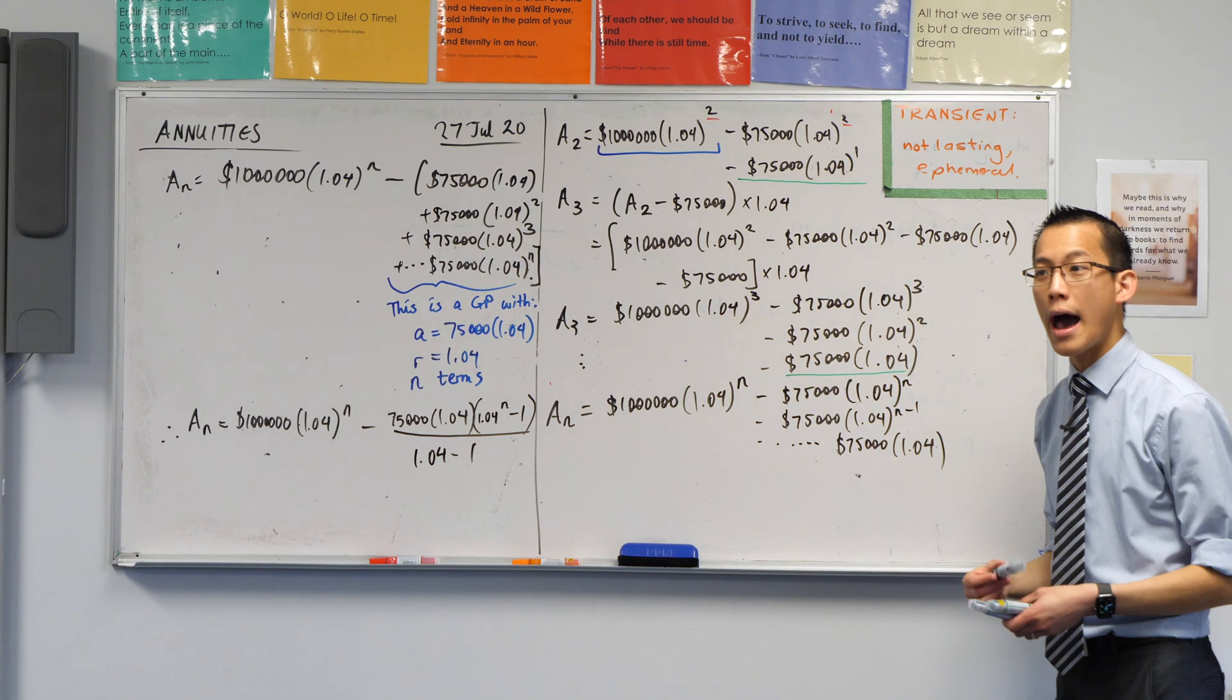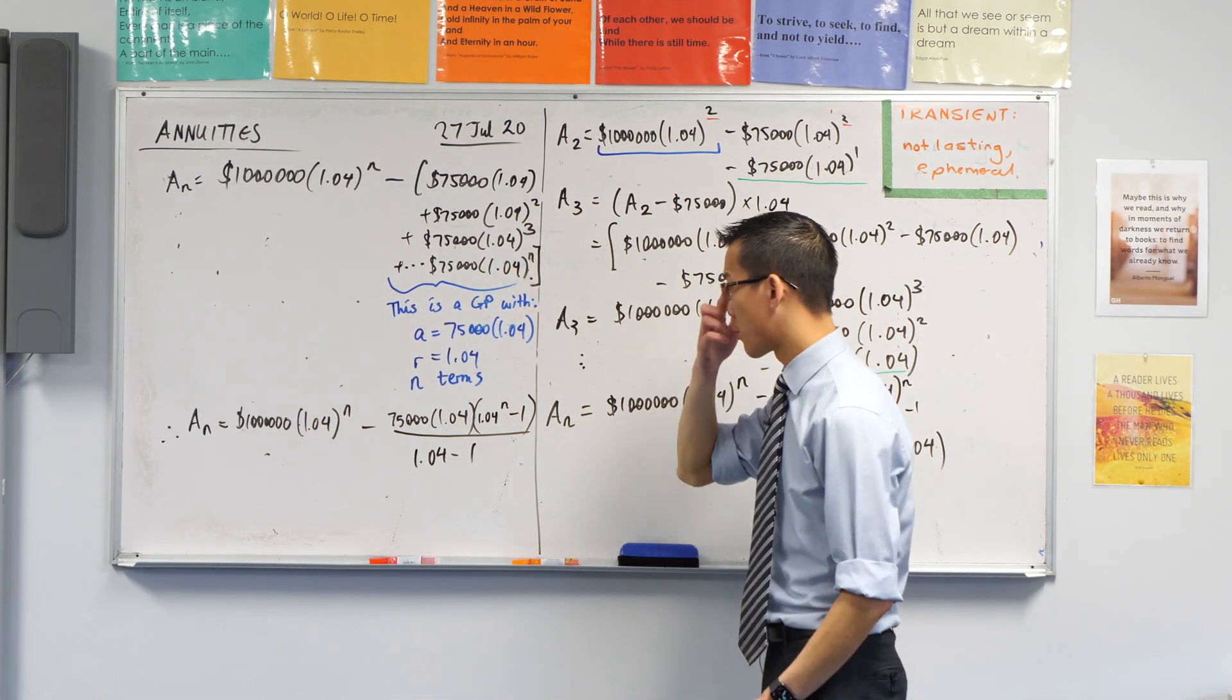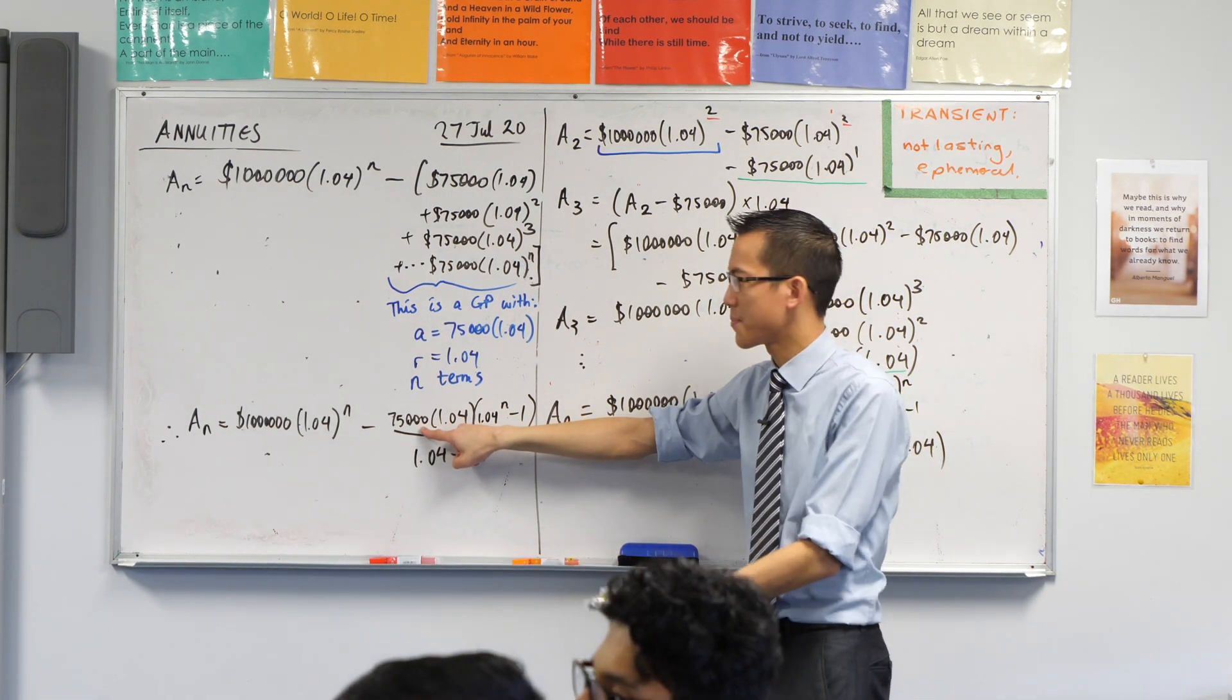Now those of you who were asking before, why didn't I factorize out the 75,000 here? I mean, I could have. But the reason I didn't is because it just comes back here. Like, it's factorized out anyway. Okay?